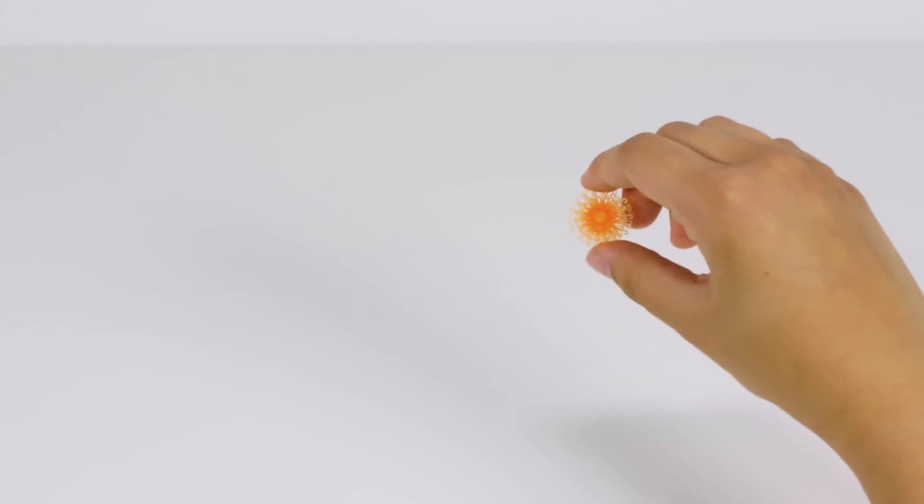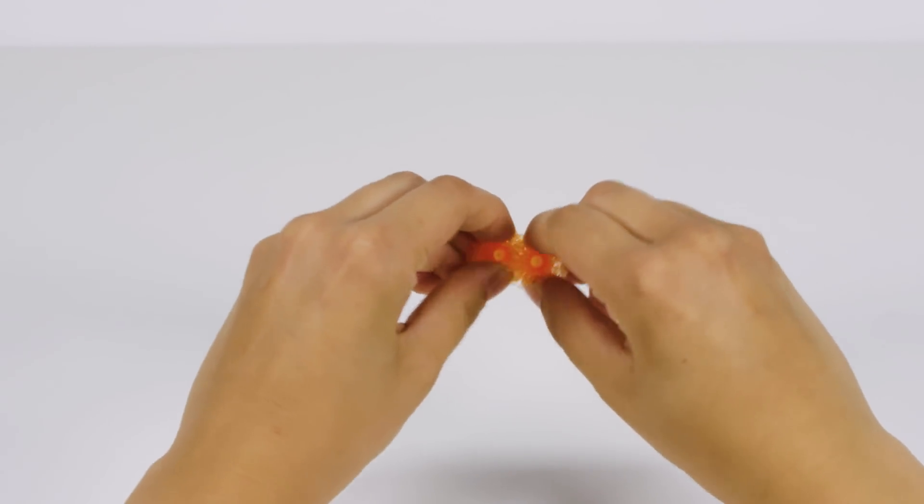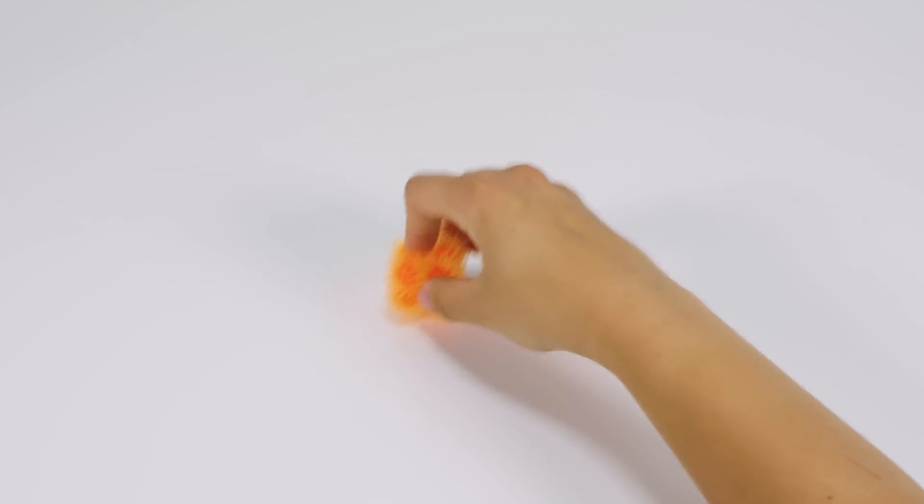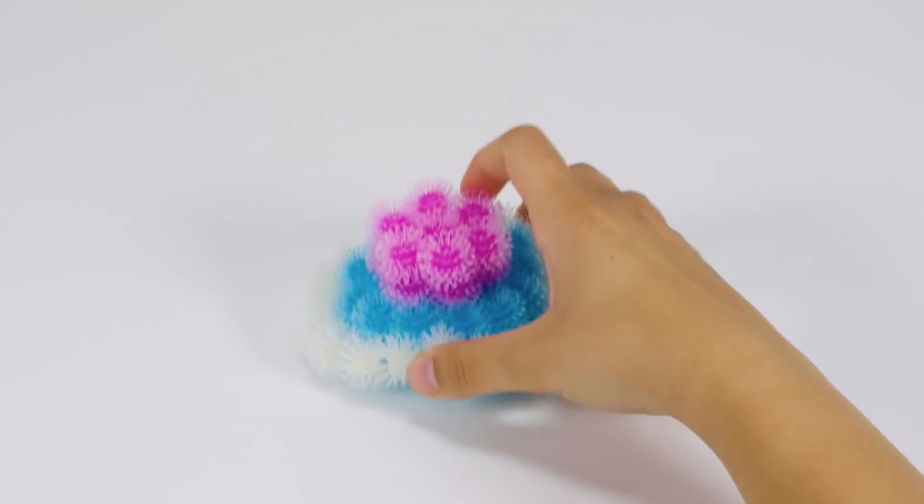Make a square using four orange Crystal Bunchums, and make another. Stack them together, and attach to the top of the pink flower.